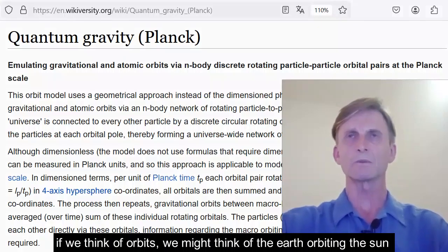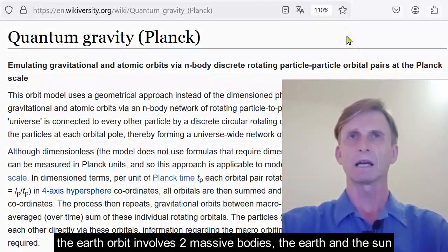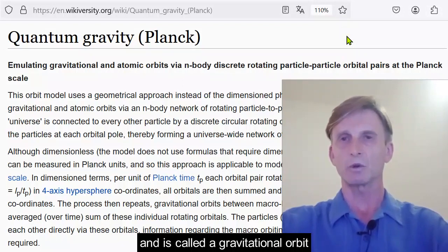If we think of orbits, we might think of the Earth orbiting the Sun or an electron orbiting a nucleus in the atom. The Earth orbit involves two massive bodies, the Earth and the Sun, and is called a gravitational orbit.